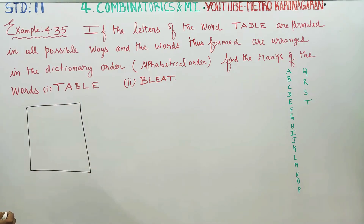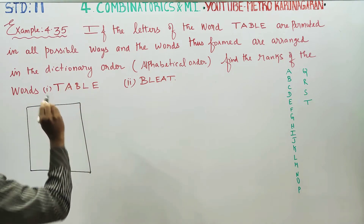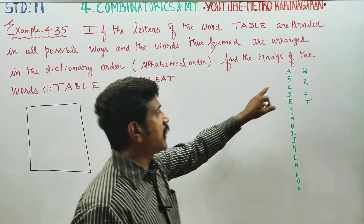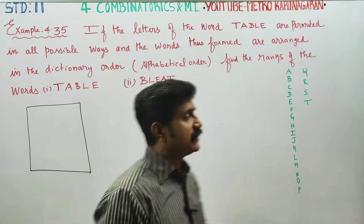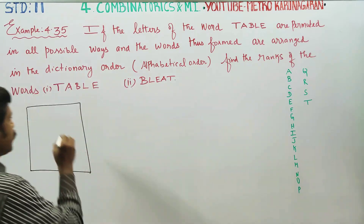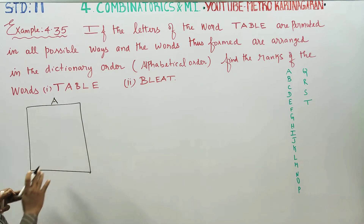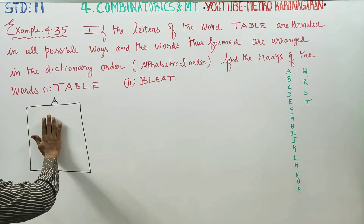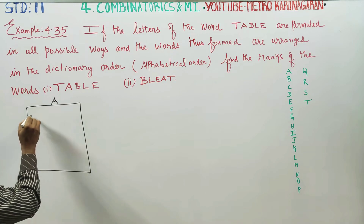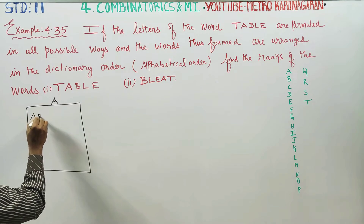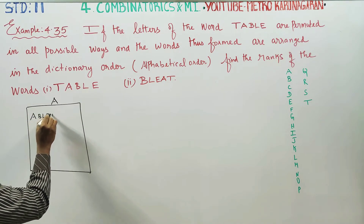What is the meaning of rank? The letters of TABLE in alphabetical order are: A, B, L, E, T.